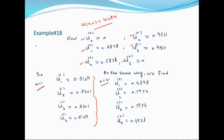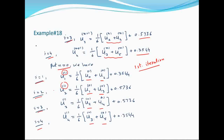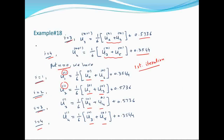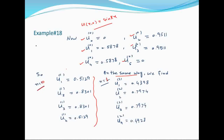इसी तरह n=2 के लिए calculate करेंगे। n=0 के लिए था पहला, n=1 के लिए था दूसरा। n=0 right-hand side पर put करने से first iteration आती है और n=1 put करने से second iteration आती है।